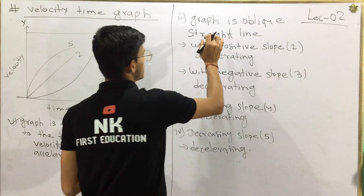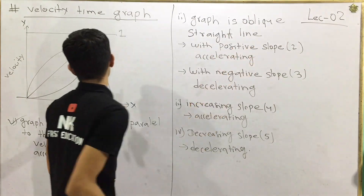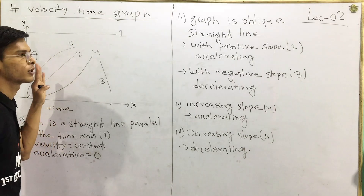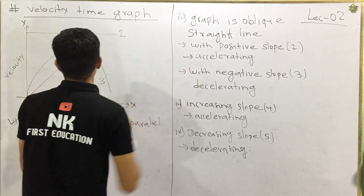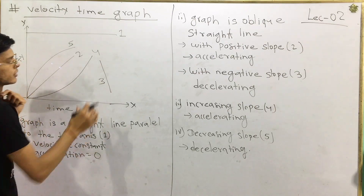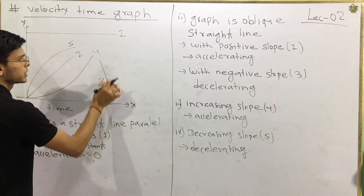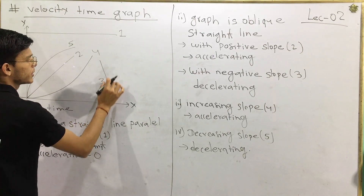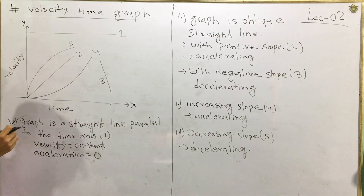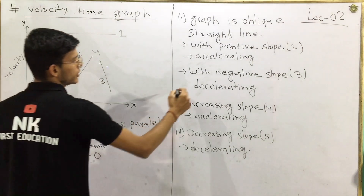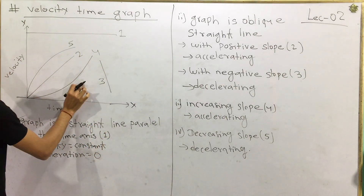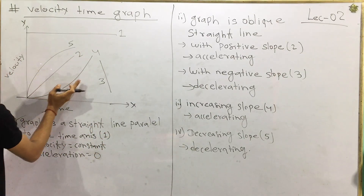When the line has a positive slope, the velocity is increasing — positive acceleration. In figure 3, the velocity is higher, indicating greater acceleration. For figures 4 and 5, the slope is increasing.